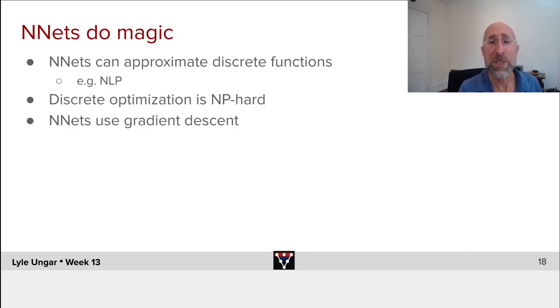Discrete optimization is NP hard. If you're trying to do something which you say this and this, but not that, then solving the optimum for most of these discrete problems is really hard. However, neural nets magically do gradient descent. They just go smoothly down and very efficiently find approximations to these really hard discrete problems.